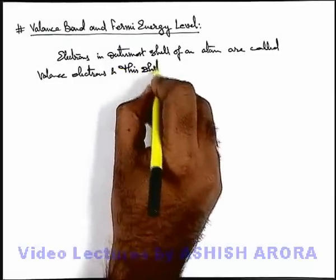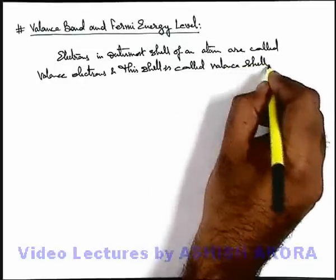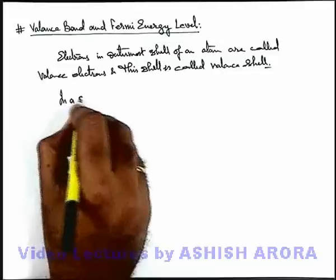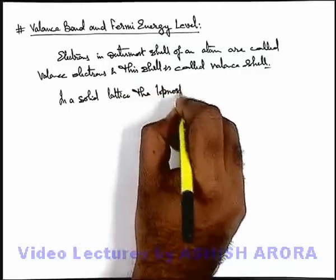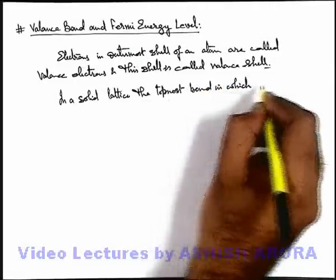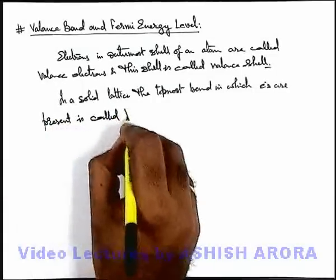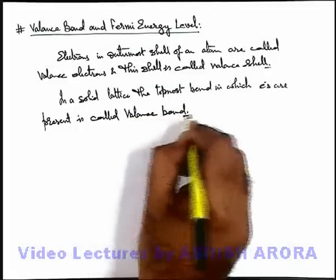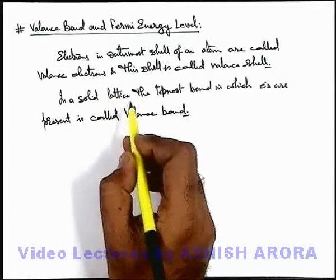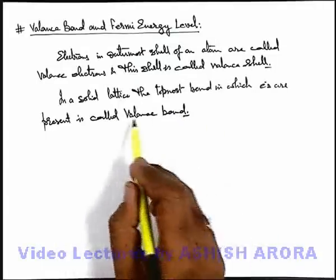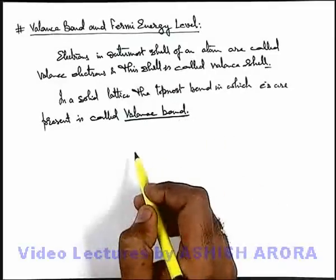The outermost shell of an atom is called the valence shell. Similarly, when we talk about a solid lattice, the topmost band in which electrons are present is called the valence band. When atoms combine to form a solid lattice, all the valence shells of these atoms overlap and modify into a valence band. This is the band in a solid lattice in which all electrons participate in contribution of their valency.